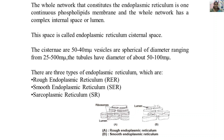The whole network constituting the endoplasmic reticulum is continuous with the phospholipid membrane and has a complex internal space or lumen, called the endoplasmic reticulum cisternal space. The cisternae are 40 to 50 millimicrons in size, the vesicles are spherical with a diameter ranging from 25 to 500 millimicrons, and the tubules have a diameter of about 50 to 100 millimicrons.